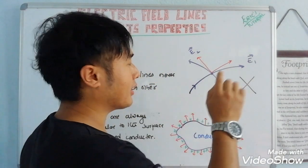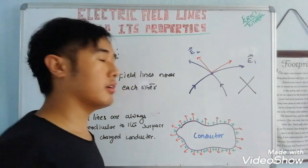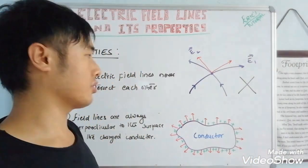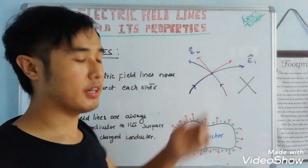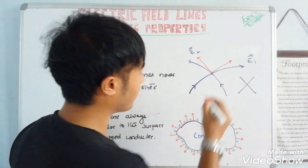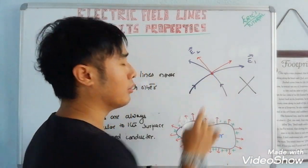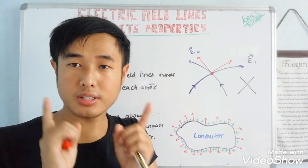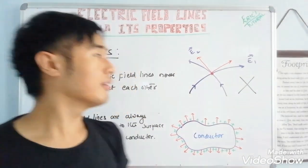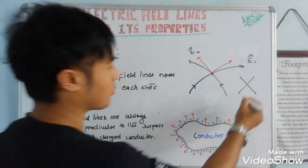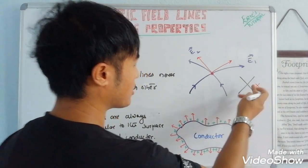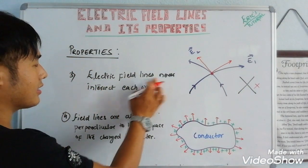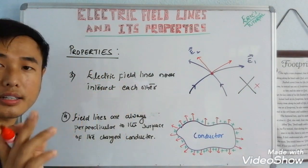At one time, at one point, there can only be one direction. Whenever two lines intersect each other, at the point of intersection there will be two directions, which is not possible. Therefore, electric field lines never intersect each other.